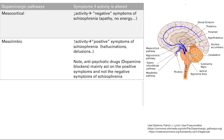Next is the nigrostriatal pathway. Dopamine in the basal ganglia goes to the striatum and promotes movement. So if you have decreased activity here, you're going to have decreased movement — that's where you get Parkinsonism. You also get other symptoms called extrapyramidal symptoms, like dystonia, akathisia, and tardive dyskinesia, which we'll discuss more in the psychiatric lectures.